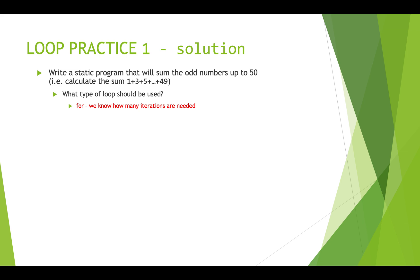So in this case, we know how many iterations are needed because it's the odd numbers up to 50. So we're going to use a for loop. And our initializer is we're going to set a variable to 1, which is the very first odd number. And the condition is we're going to run the loop while the variable is less than or equal to 50. And then our update is we're going to increment by 2. And that's how we get the next odd number.